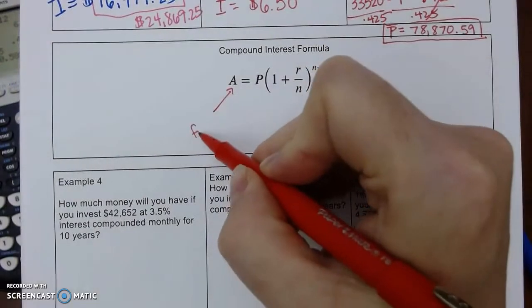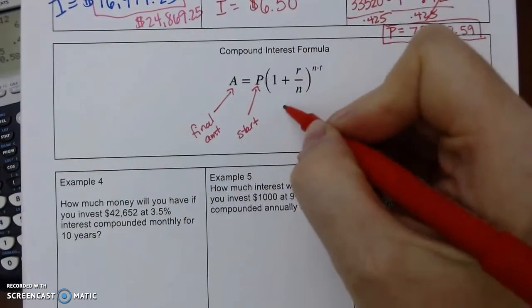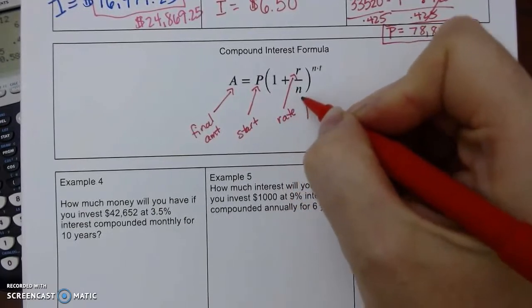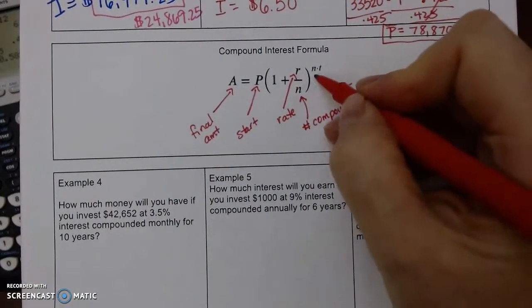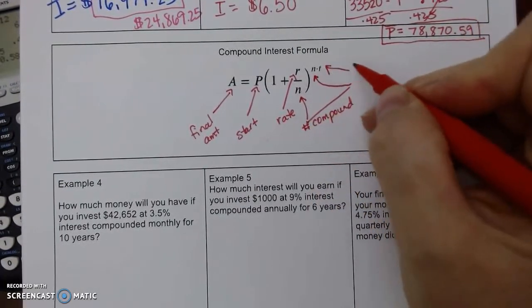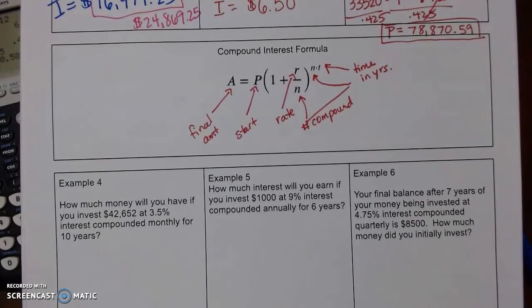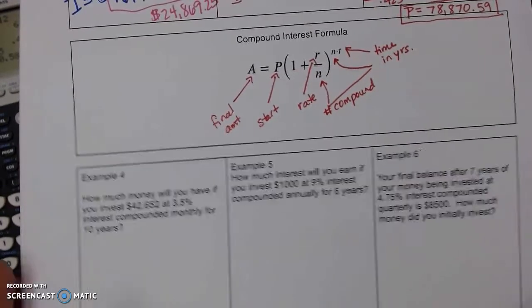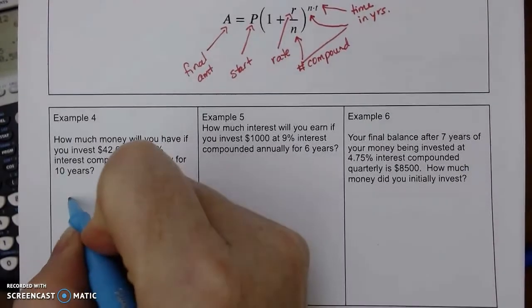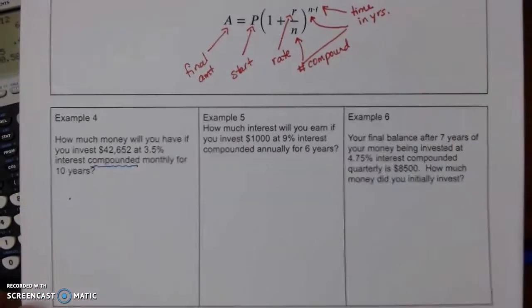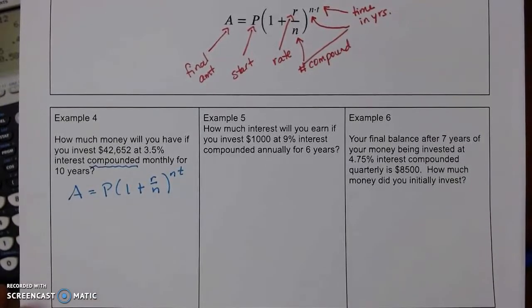So, A is our final amount. P is our principal, what we start with. The one stays, the plus stays. R is still our rate as a decimal. N is the number of times they call it compounding. That's how many times they calculate it. N is still the same. And then T is our time. Alright. So let's do some of these. Same thing, money goes to two decimal places.